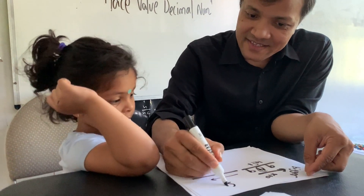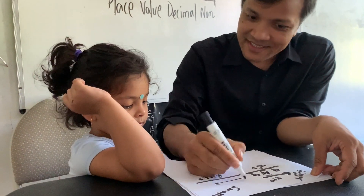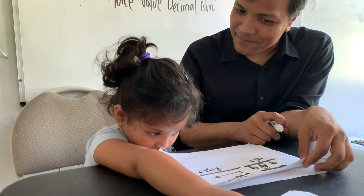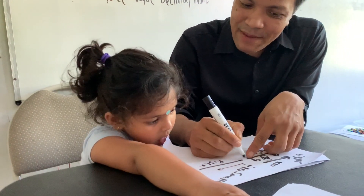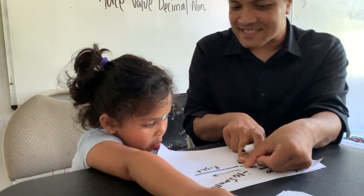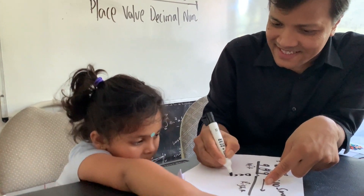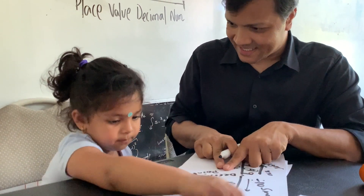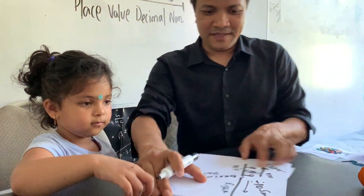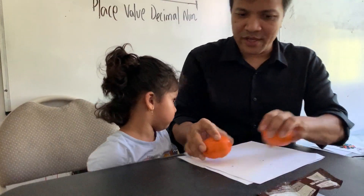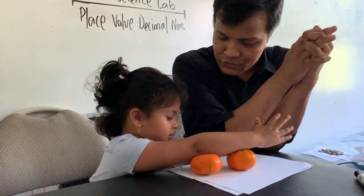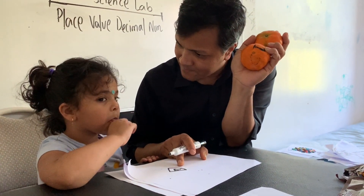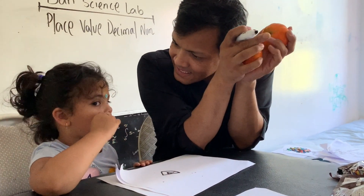When it moves to the left it gets bigger — bigger by ten times. But if it goes to the right it gets smaller — smaller by ten times. Does that make sense? So now we're gonna put a separator over here — a decimal point. What do you call it? Decimal point. Okay, very good. So this is called a whole number. Can I make it a fraction? What does fraction even mean?